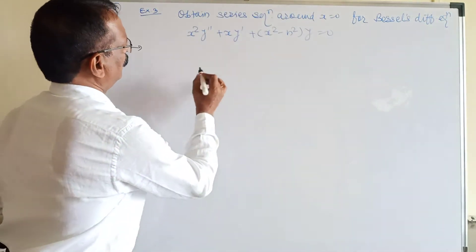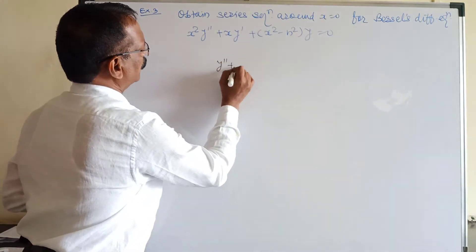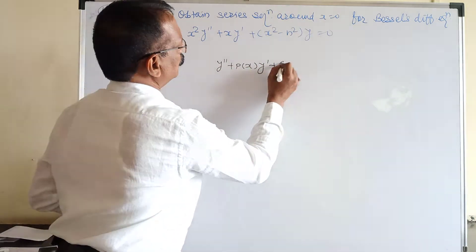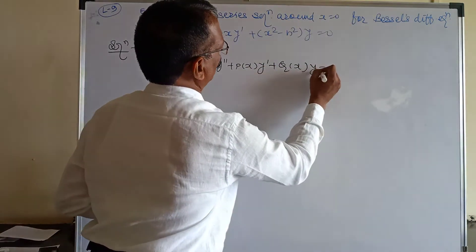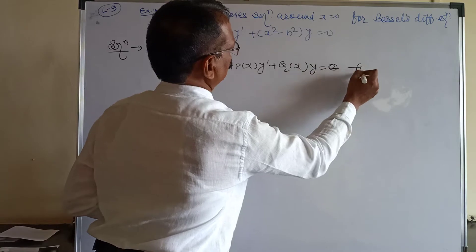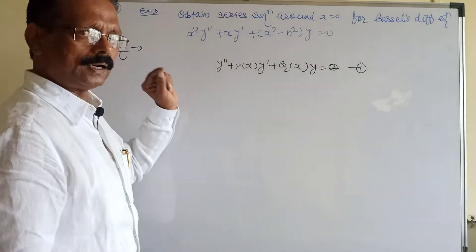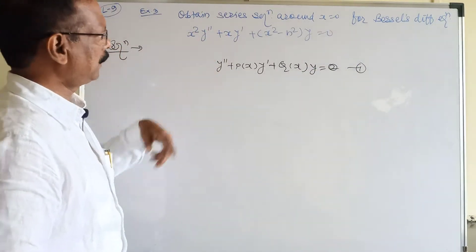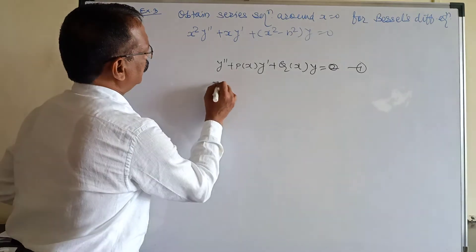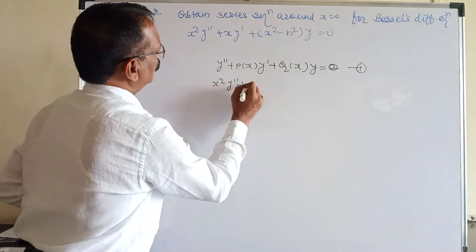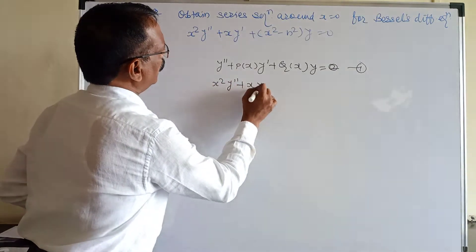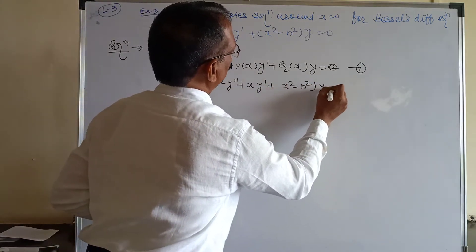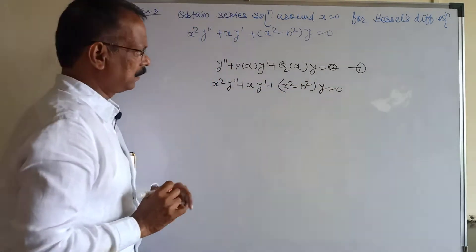We know the standard differential equation form is y'' + P(x) y' + Q(x) y = 0. The given equation is x² y'' + x y' + (x² − n²) y = 0. We have to write the given equation in this standard form.